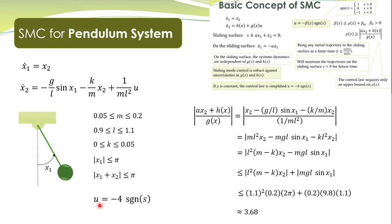This control law will bring any initial condition to the sliding surface, maintain the trajectories on the sliding surface, and on the sliding surface, the trajectories will asymptotically converge to the equilibrium point.